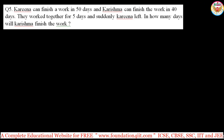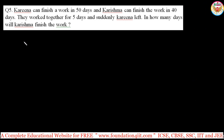One more question: Kareena can finish a work in 50 days and Karishma can finish it in 40 days. But one stops partway — they work together for 5 days, then suddenly Kareena leaves. How many days will Karishma take to finish the remaining work? For this, you can use the same values 50 and 40. First find how much work they do together in 5 days: 5 × (1/50 + 1/40).